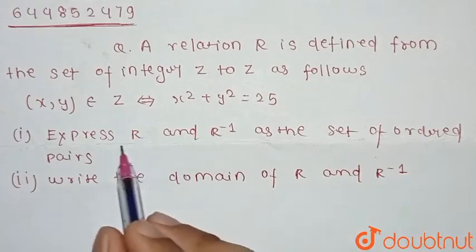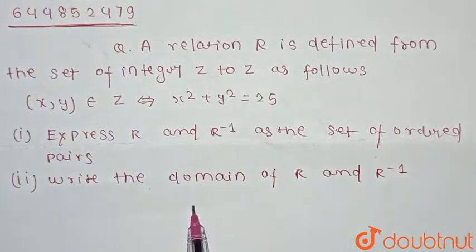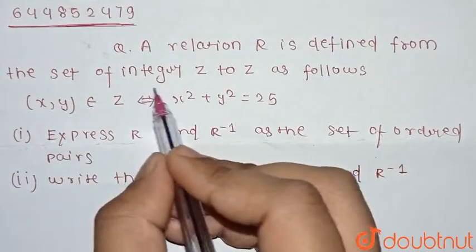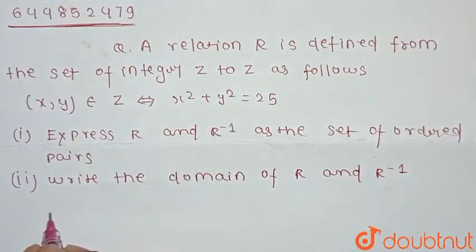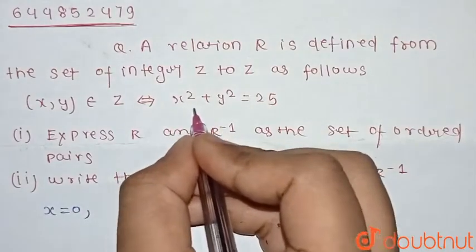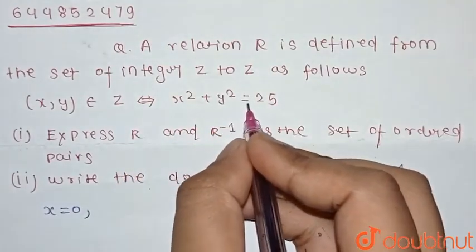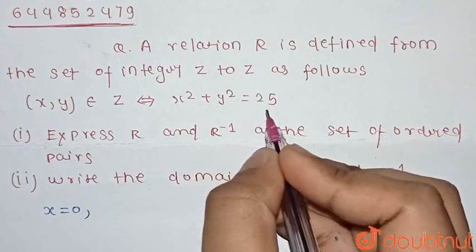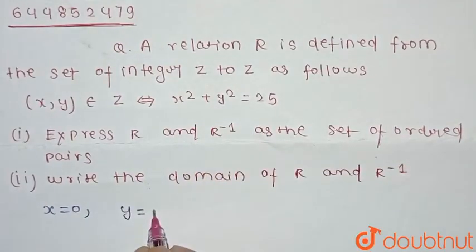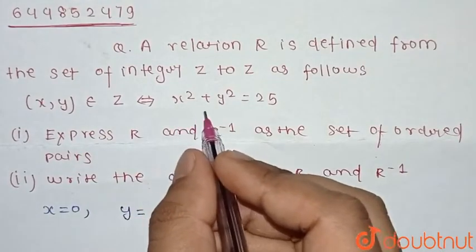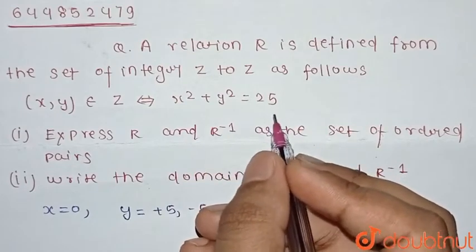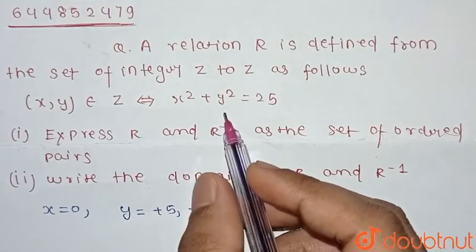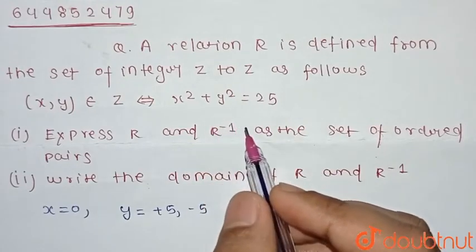Let's find the relation from Z to Z by finding all integer values of x and y. At x = 0, y² = 25, so y = ±5. At x = 1, y² = 25 − 1 = 24. But 24 is not a perfect square, so y can't be an exact integer. So x = 1 is not valid.